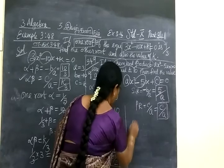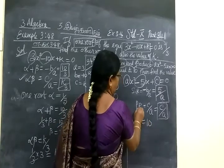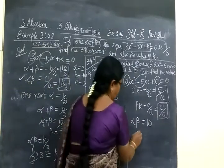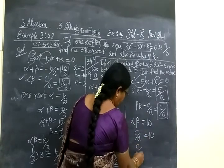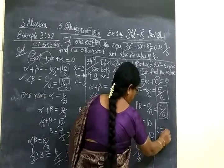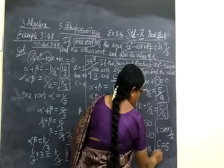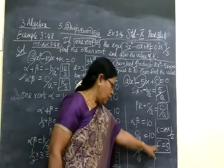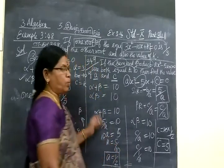Now you want to find the value of c. Product of the roots: alpha times beta equals 10. What is product of the roots? c by a. So c by a equals 10. c divided by a value of half equals 10, which means c equals 10 times half equals 5. So the value of a equals half and c equals 5. This also comes under two-mark questions. Thank you.